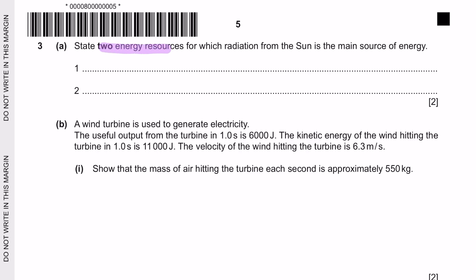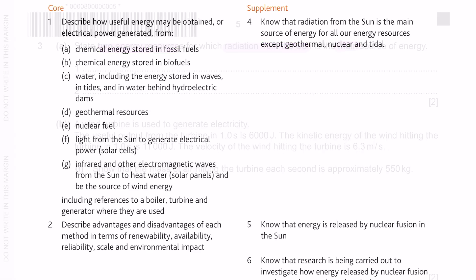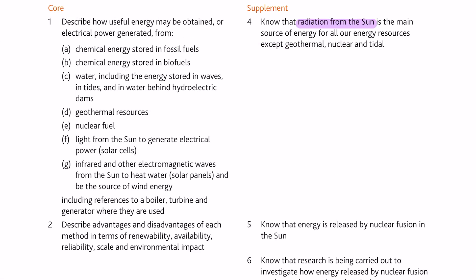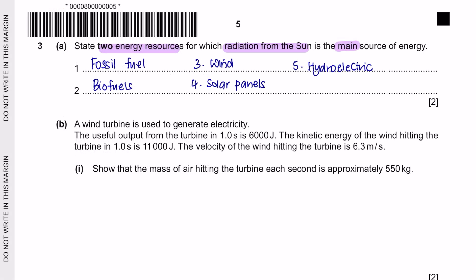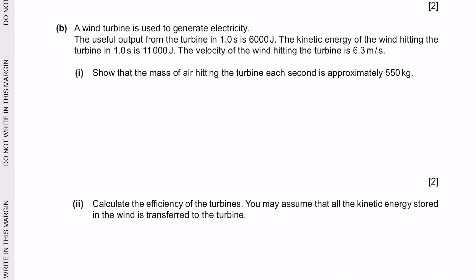Question 3 part A: State two energy resources for which radiation from the sun is the main source of energy. So remember that the radiation from the sun is actually the main source of energy for all energy except three of them which is geothermal, nuclear and tidal. So these are some of the energy resources that you can mention in your answer. Question part B: A wind turbine is used to generate electricity. The useful output from the turbine in one second is 6,000 joule. The kinetic energy of the wind hitting the turbine in one second is 11,000 joule. The velocity of the wind hitting the turbine is 6.3 meters per second.